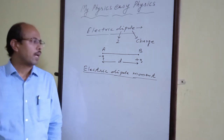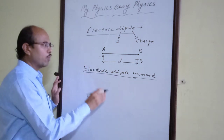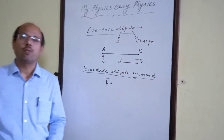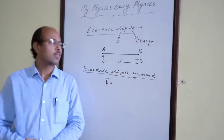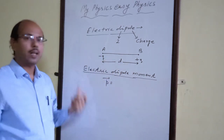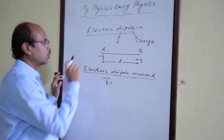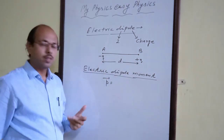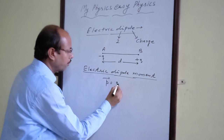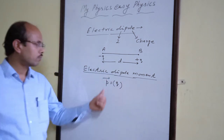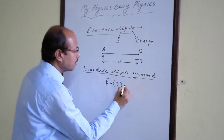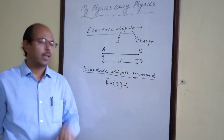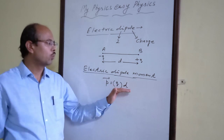For every electric dipole, the dipole moment is given by the product of the magnitude of either charge and the distance between them. Since there are two charges — one is minus q and the other is plus q — their magnitudes are the same. That magnitude is q, and the distance between them is denoted as d.